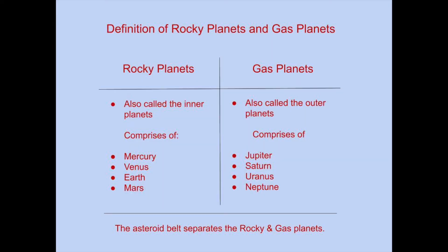Definition of Rocky Planets and Gas Planets. To be able to compare the both, we must be able to define the meaning of rocky planets and gas planets. Rocky planets are also called the inner planets — they are Mercury, Venus, Earth, and Mars. In contrast, gas planets are also called the outer planets, consisting of Jupiter, Saturn, Uranus, and Neptune. The asteroid belt also separates the rocky planets and the gas planets apart.